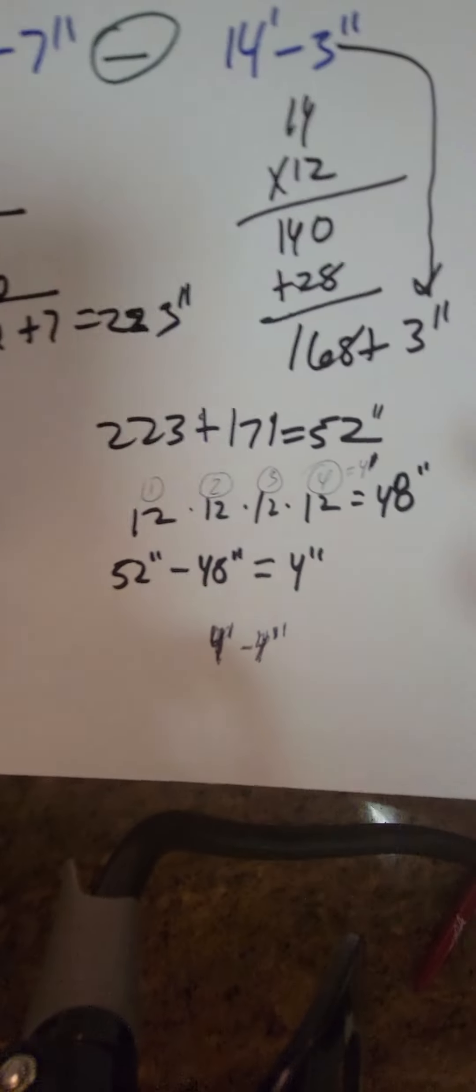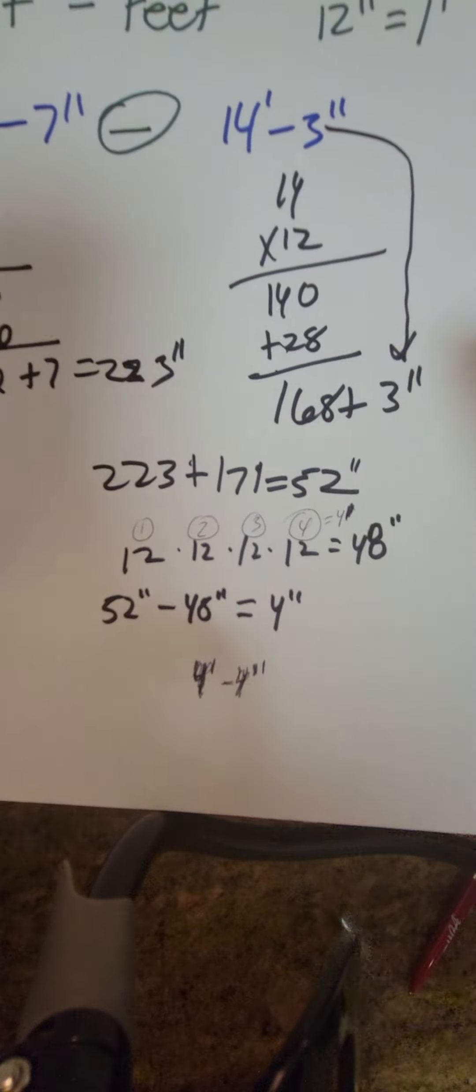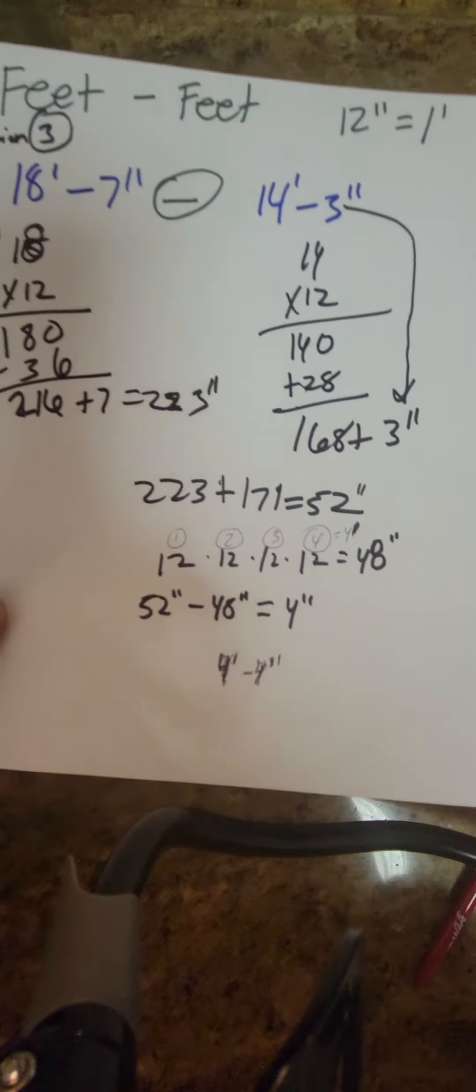All right, so just going back to what we were talking about. We took 223 plus 171 gives us 52. You don't want a plus, that's a mistake. You don't want a plus on this, you want a minus. See, this is like when you rush.